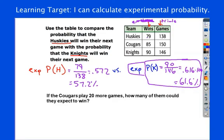One more follow-up question. If the Cougars play 20 more games, how many of them would you expect that they would win? I want you to work on this with your partner. You're going to use experimental probability. I want you to kind of think this through and see if you can come up with a solution. I'm going to pause the video for two or three minutes. See if you can come up with a good solution to this. When you're ready, come back and hit play.